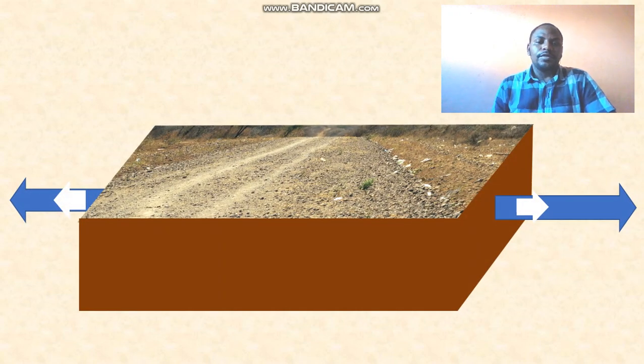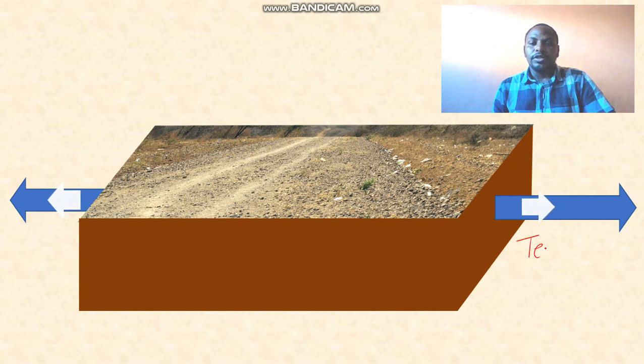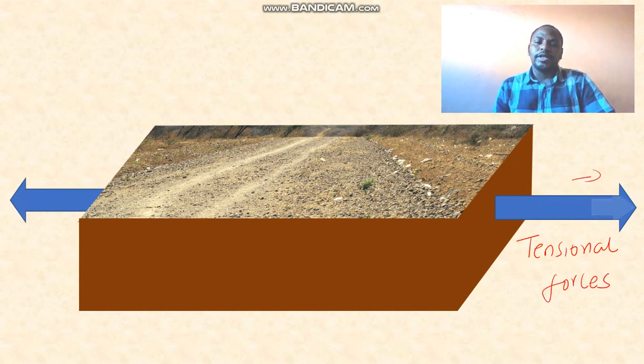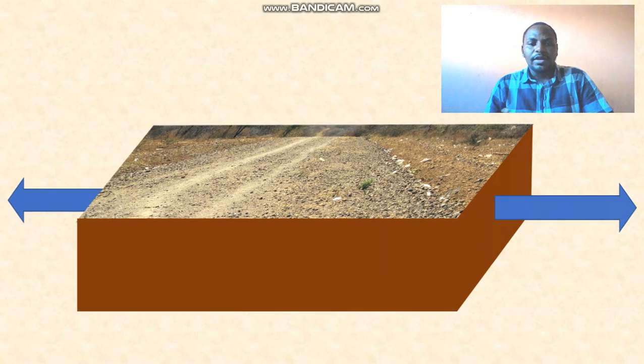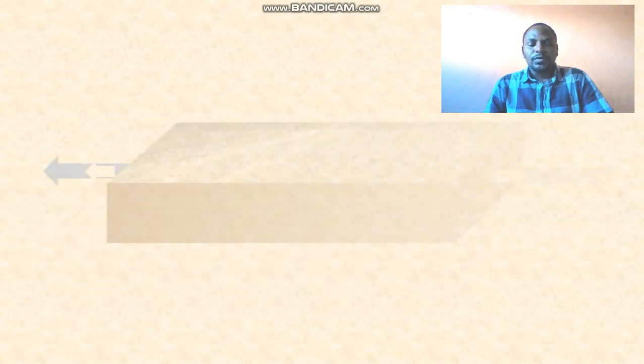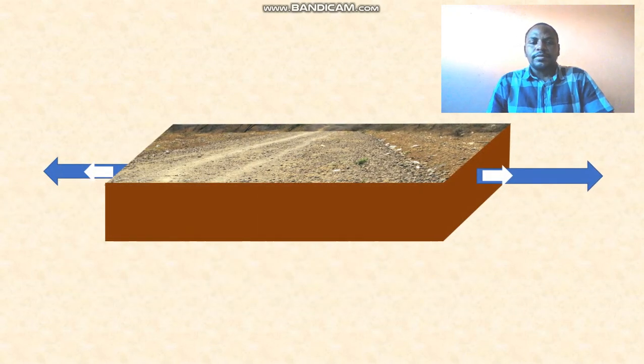First of all, when crustal rocks are subjected to tensional forces, these are tectonic forces which act on either side of the crustal rocks or piece of land, a block of land which is pulled sideways.